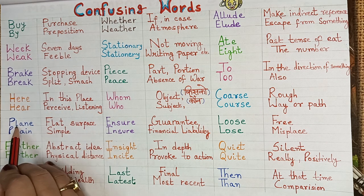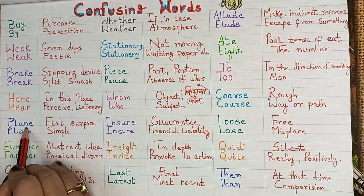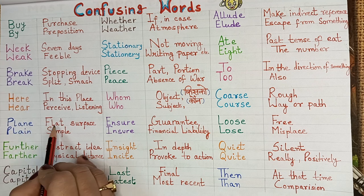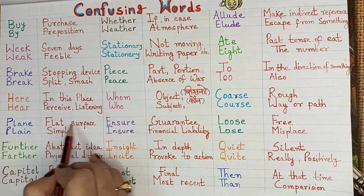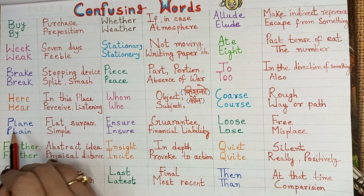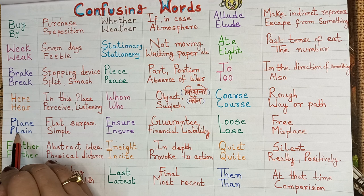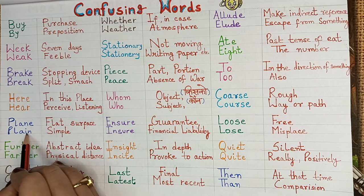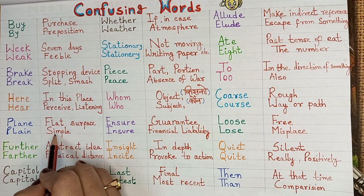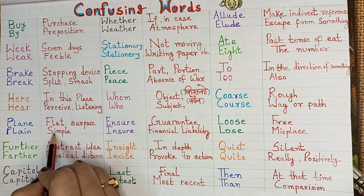P-L-A-N-E — plane means flat surface. P-L-A-I-N — plain means simple.